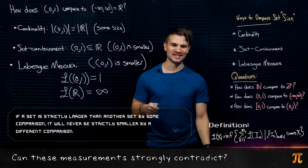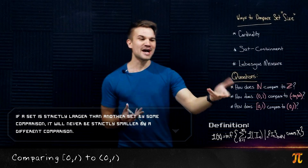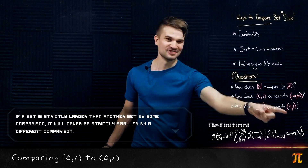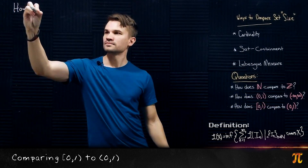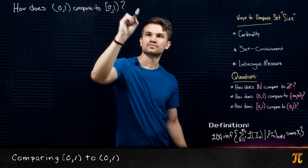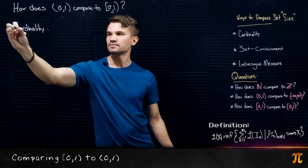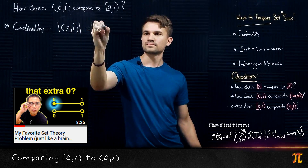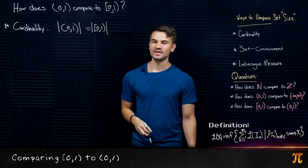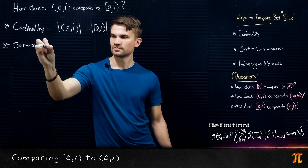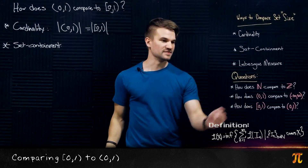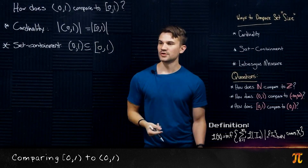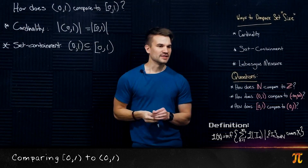Now we're going to compare the half-open interval [0,1) to the open interval (0,1). In other words, we're just adding the point 0 to (0,1). With respect to cardinality, we already know their cardinalities are the same size. With respect to set containment, we add the point 0, so (0,1) is a subset of [0,1), meaning by set containment the open interval is smaller.